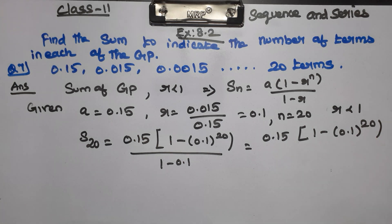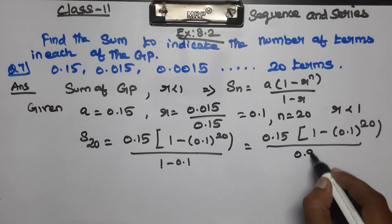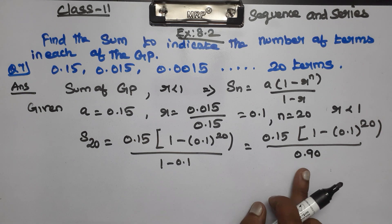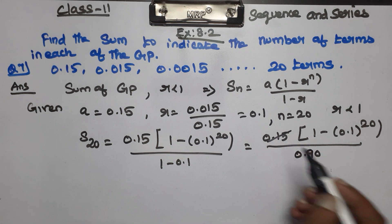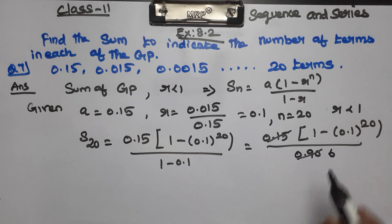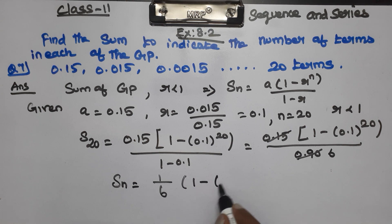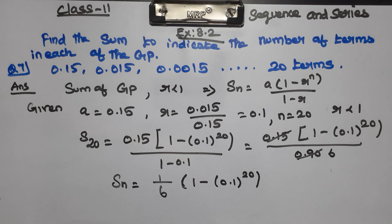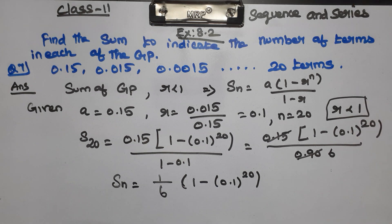Simplifying further: 0.15 divided by 0.9 — since 15 divided by 9 gives us a fraction — the answer is Sn equals (1/6) into (1 - 0.1²⁰). This is the sum of the answer. R value less than 1 uses this formula; r value greater than 1 uses the other. That completes question 7.